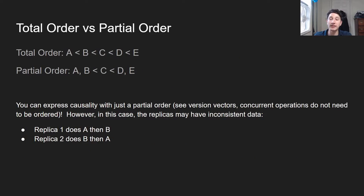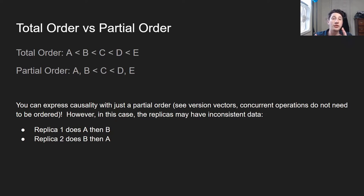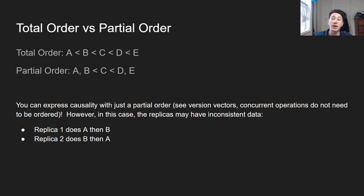To illustrate: imagine we have five writes — A, B, C, D, and E. A total order might order them A, B, C, D, E. But let's say A and B were actually concurrent, meaning two writes that don't know about one another — there's no happens-before relationship, they just happen at the same time. And imagine D and E also happened at the same time. A partial order would say A and B are incomparable. However, maybe C knows about both of them, so C is greater than A and B.